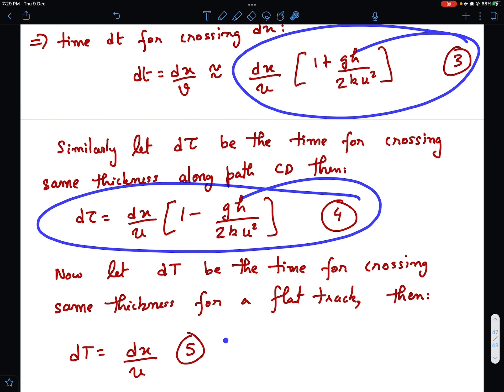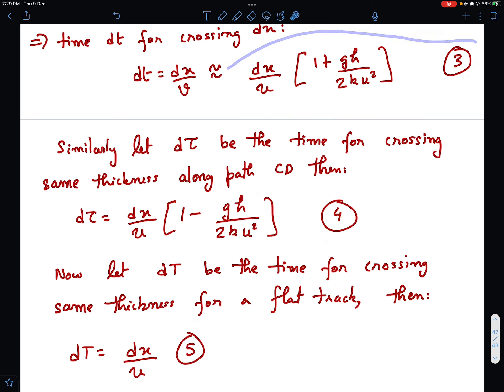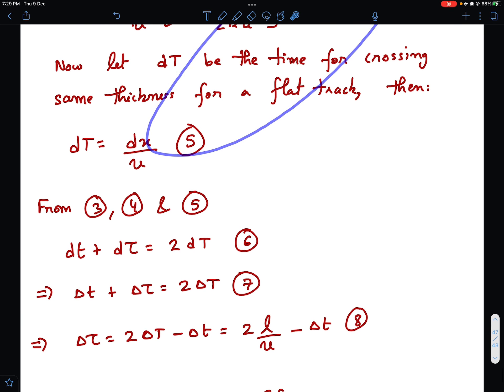Now look carefully at equations 3, 4 and 5. If you see, here there is plus gh/(2ku²), here there is minus gh/(2ku²). So if you add 3 and 4, this term is going to cancel off and you will be left with 2dx/u which is nothing but twice dT. So I have just used these 3 equations: dt + dτ = 2dT. Capital T is for flat path, dt is for the convex path and dτ is for the concave path. And therefore, if you just integrate equation 6, dt becomes Δt, dτ becomes Δτ and dT becomes ΔT. Just rearrange this and you can solve for Δτ: Δτ = 2ΔT - Δt.